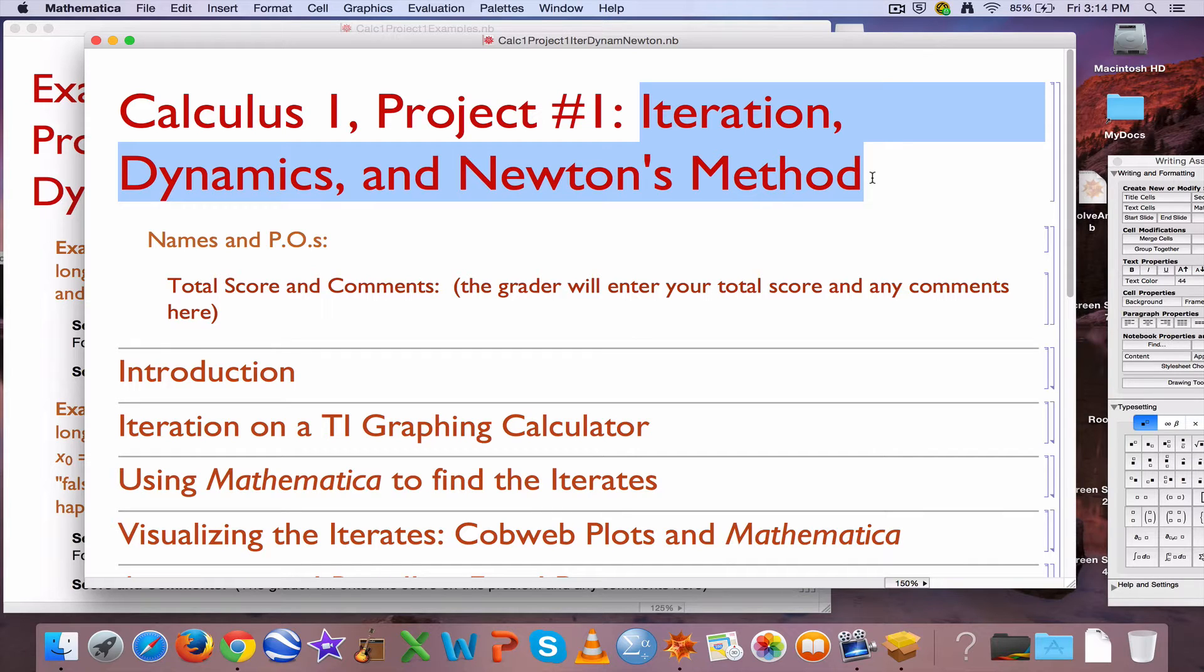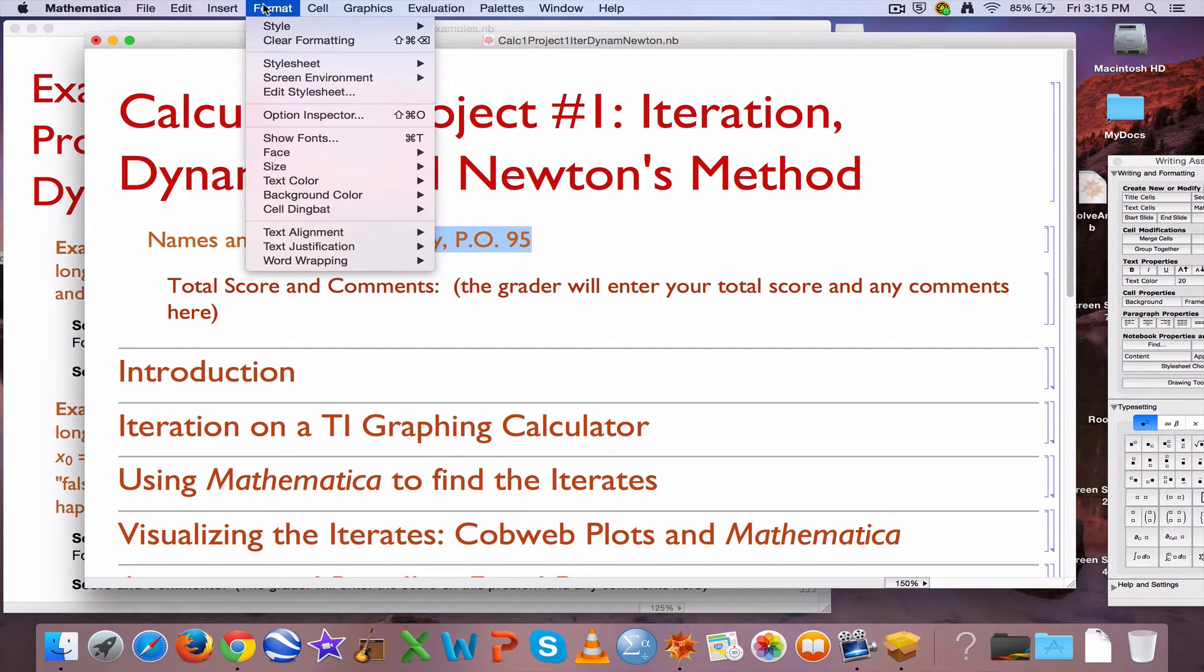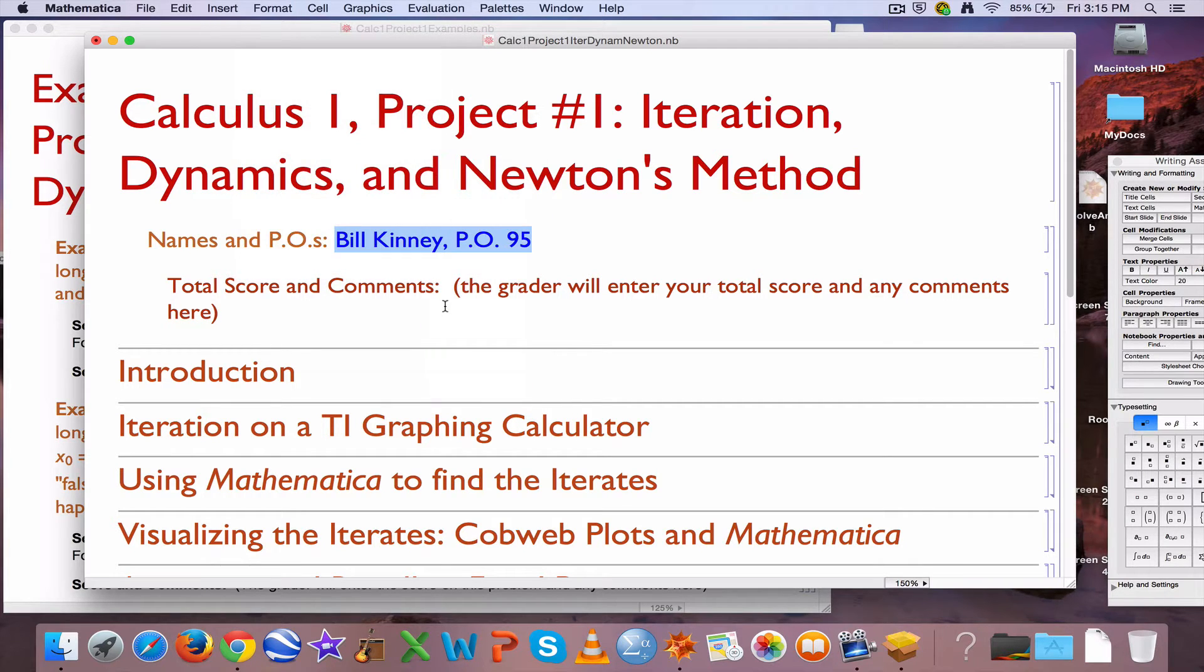This is a Mathematica-based project number one for my Calculus students, and for those students the first thing I should say to you in my description here is that you should put your names and POs in this spot. For example I would type my name like this and put my PO number, and I'd also like my calculus students to highlight whatever they write, whatever they type, in blue.